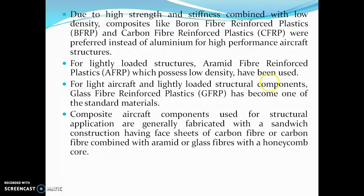Due to the high strength and stiffness combined with low density, composites like boron fiber reinforced composites and carbon reinforced composites were preferred instead of aluminum for high-performance aircraft structures. Boron fiber reinforced plastics use boron as the matrix and fibers as the reinforcement. When carbon is used as a matrix material, it is called carbon fiber reinforced plastics.